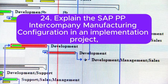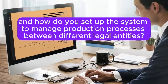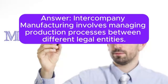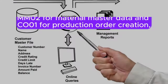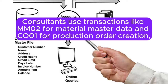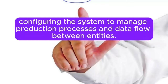Question 24: Explain the SAP PP intercompany manufacturing configuration in an implementation project. How do you set up the system to manage production processes between different legal entities? Consultants use transactions like MM02 for material master data and CO01 for production order creation, configuring the system to manage production processes and data flow between entities.